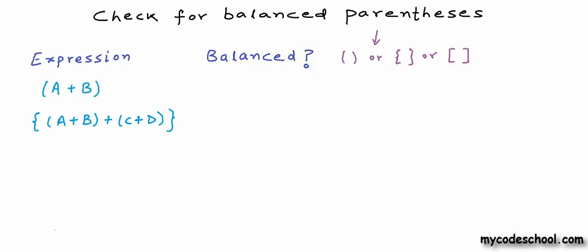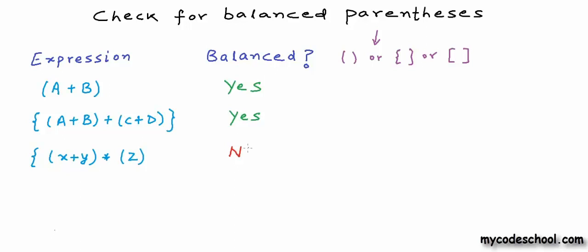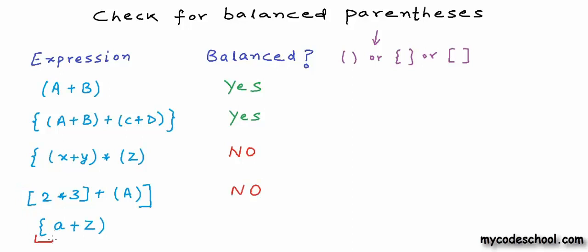What we really mean by balanced parenthesis is that corresponding to each opening parenthesis, curly brace, or bracket, we should have a closing counterpart in correct order. These two expressions here are balanced. However, the next expression is not balanced — a closing curly brace is missing. Another expression is not balanced because we're missing an opening square bracket. If we open with a curly brace we should close with a curly brace; a parenthesis and curly brace won't count for each other.